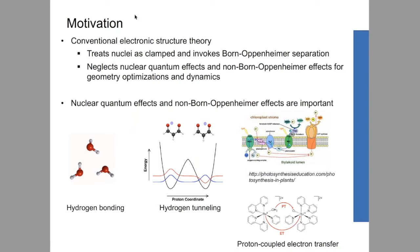So what's the motivation behind NEO methods? For conventional electronic structure theory, nuclei are often treated as clamped and the Born-Oppenheimer separation is invoked. This neglects nuclear quantum effects and non-Born-Oppenheimer effects, especially for geometry optimizations and dynamics. However, nuclear quantum effects and non-Born-Oppenheimer effects are very important for many systems. For example, for hydrogen bonding in water clusters, nuclear quantum effects such as zero-point energy for the hydrogens are very important, and including them can change the relative energy trend for different water isomers.